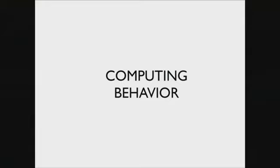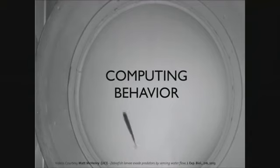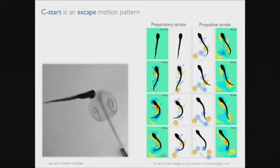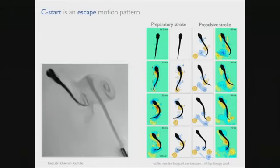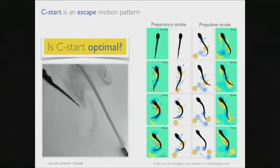The next example is in biology at a different scale — computing behavior, something experiments cannot do. We're computing hunting behavior: a fish tries to catch a smaller fish. The smaller fish bends its body in the C-start escape pattern — well known to biologists — using its tail to move vortices and escape. We didn't just want to replicate what nature does; we wanted to ask: is this optimal? Is nature optimal? We always say nature does wonderful things, but let's examine if that's true.